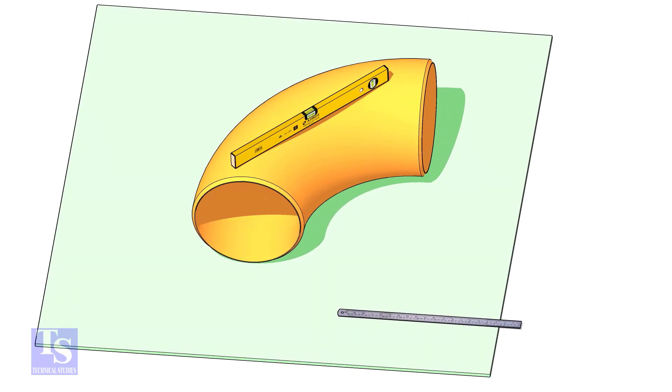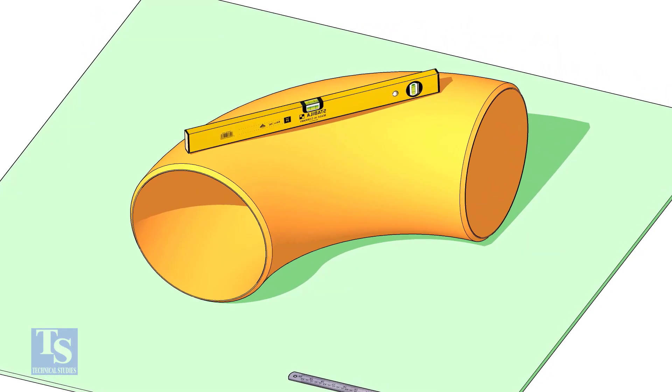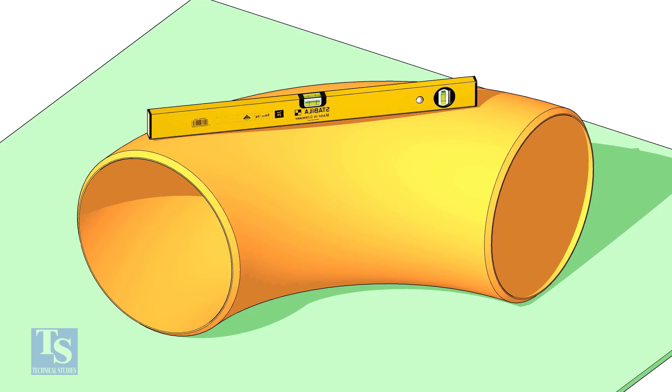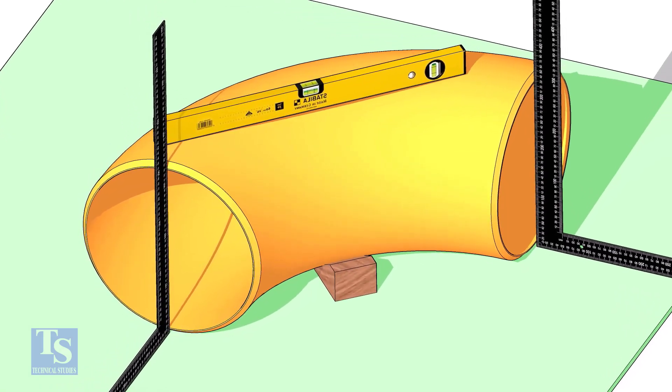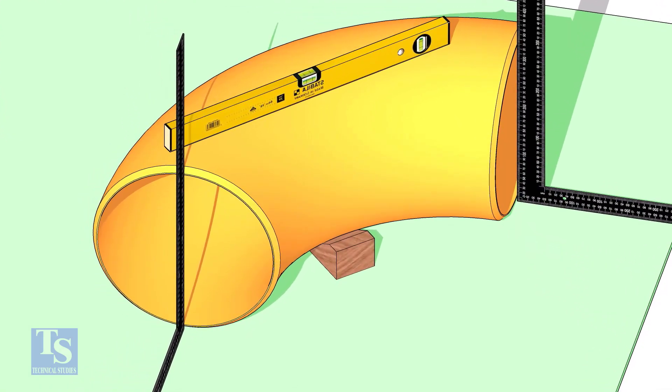Put the elbow on a leveled plate. Check the level of the elbow. Make the face of the elbow right angle to the plate. Put packing on both sides of the elbow.